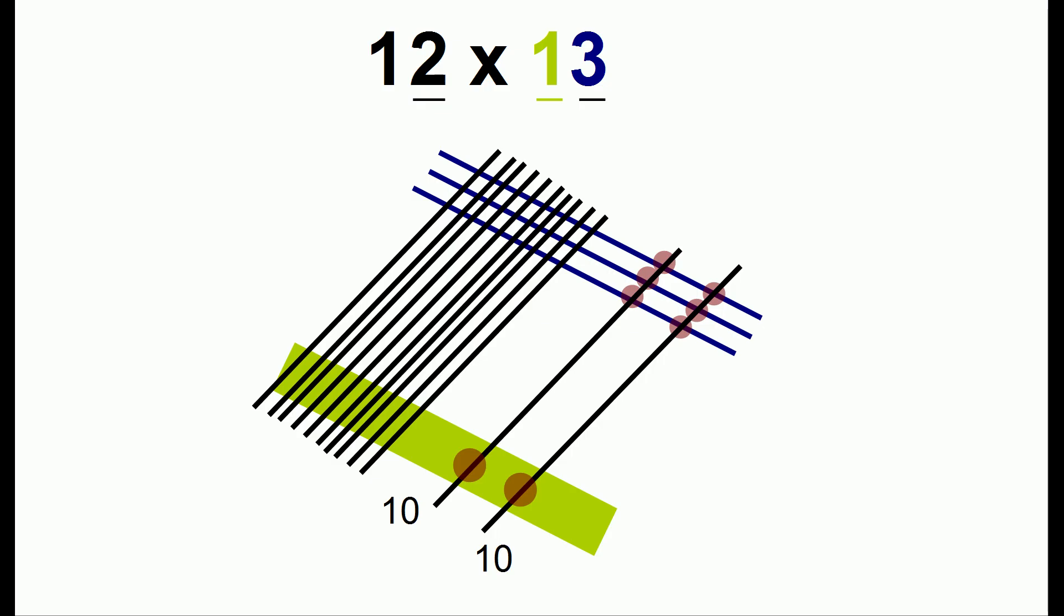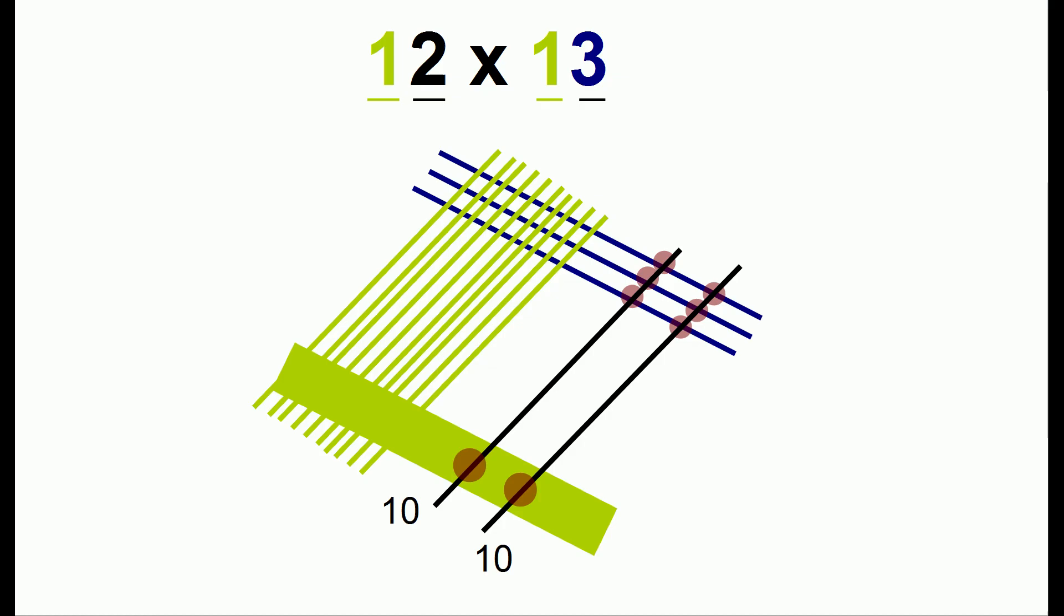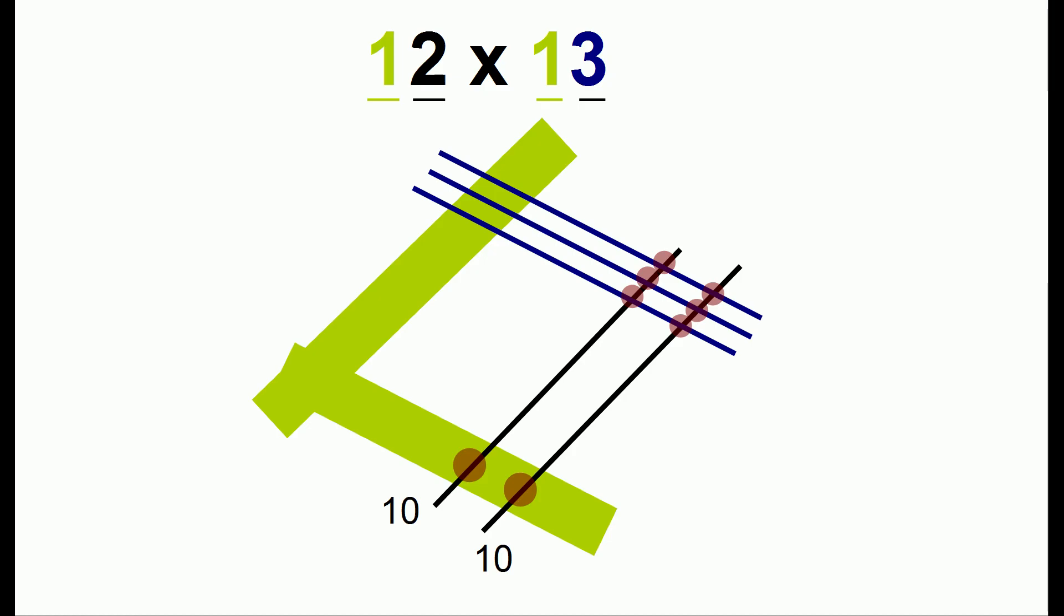And if we go through and count all the dots, we will get the answer. But just as before, we're going to group these 10 lines into a single bundle. And we're going to make it one thick line. And this thick line is really 10 lines. So when we count the intersections, we're going to have to remember it's 10 lines.